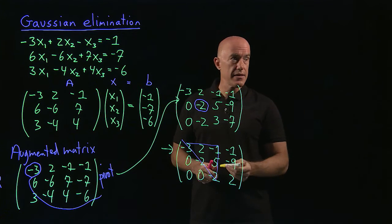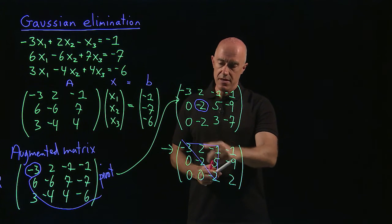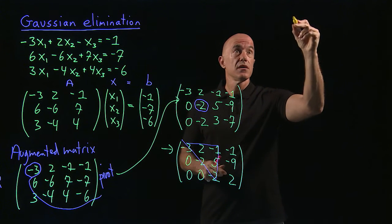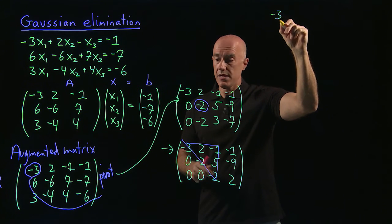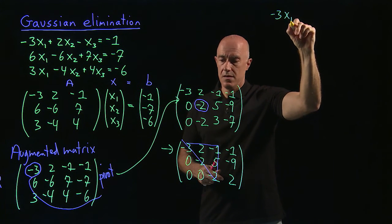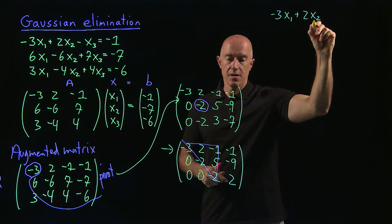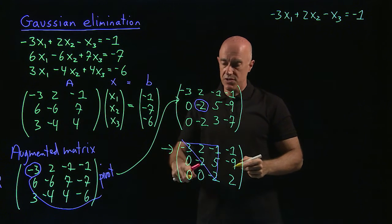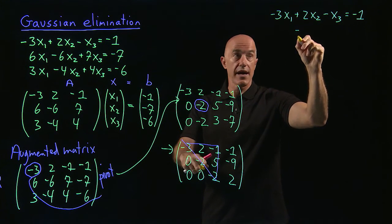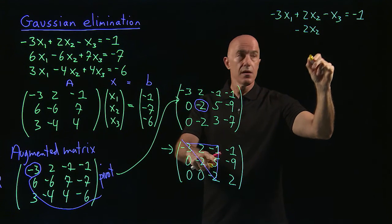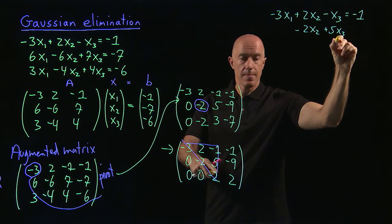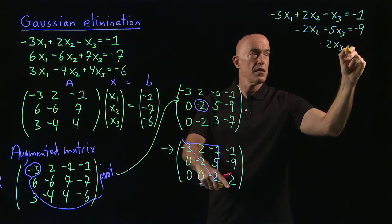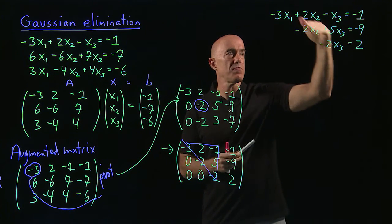That's the goal of Gaussian elimination — to bring the A matrix to upper triangular form. When we do that, we have a new system of equations. The first equation is: minus three x1 plus two x2 minus x3 equals minus one. The second equation is: minus two x2 plus five x3 equals minus nine. The third equation is: minus two x3 equals two. This is our upper triangular system.